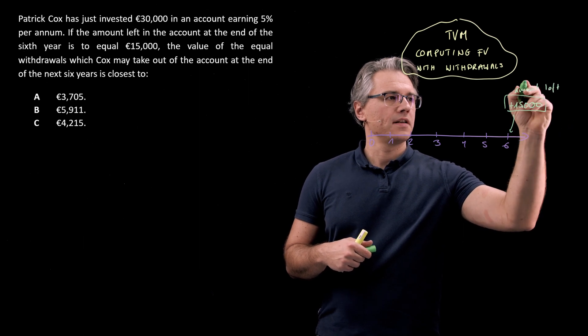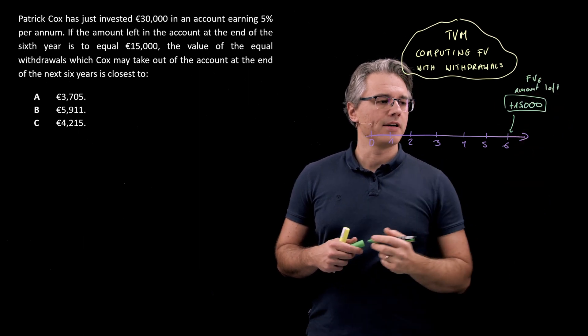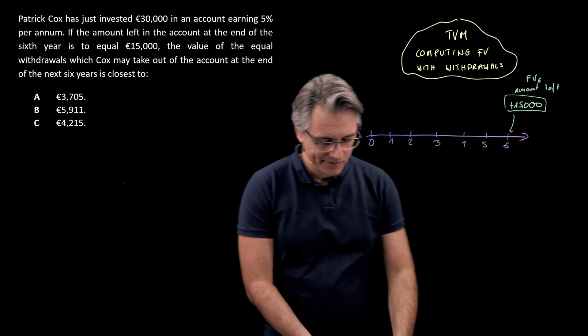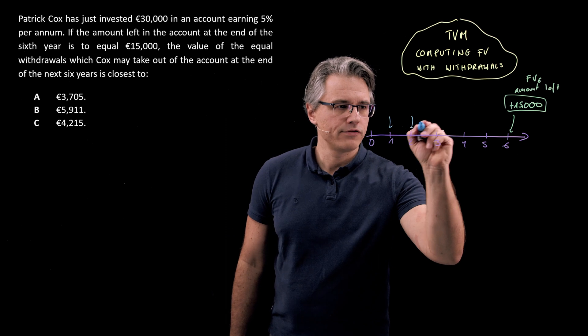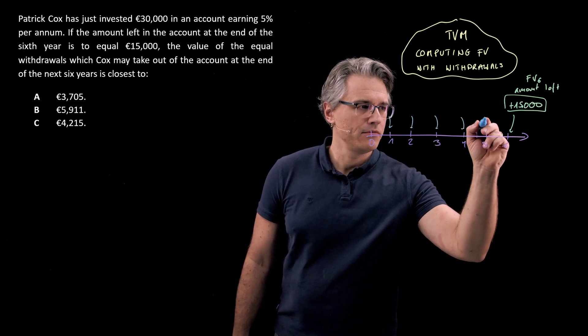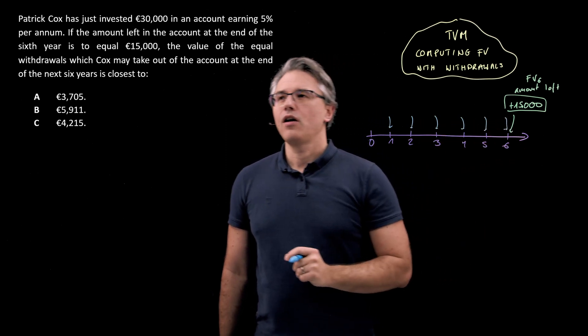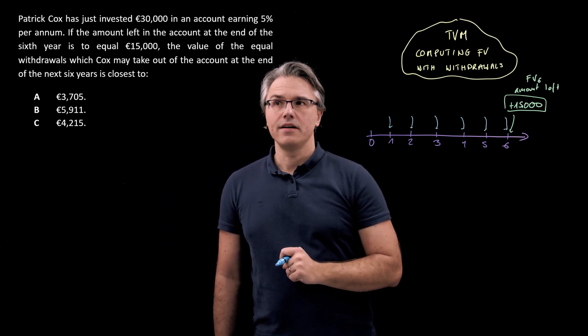And I'm going to treat this as basically our future value at time six. And the question is all about what is the value of the equal withdrawals that he'll be able to take out over the course of the next six years.